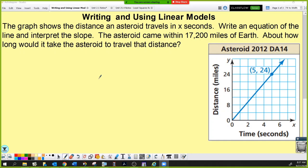This graph shows the distance an asteroid travels in x seconds. So we have x is time, and our y value is distance, and I have it in miles. The first thing you need to do is write an equation of the line, and then we have to interpret the slope. We are talking slope-intercept form, y equals mx plus b.